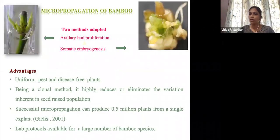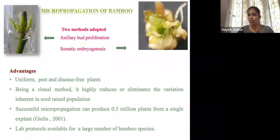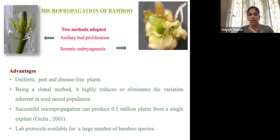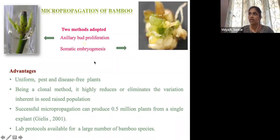In micropropagation, we adopt two methods: axillary shoot proliferation and somatic embryogenesis. These are the common methods for bamboo micropropagation. The advantages are that it can produce uniform plants, which reduces the inherent genetic variation that arises in the seed population, as well as producing pest and disease-free plants. According to Gielis in 2001, successful micropropagation can produce about 0.5 million plants from a single explant. There are protocols available for around 54 bamboo species.